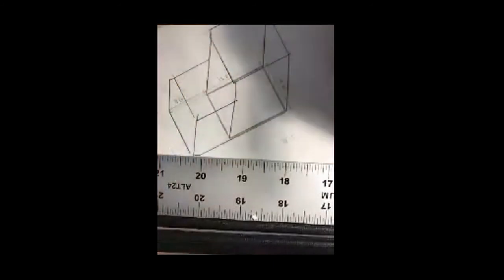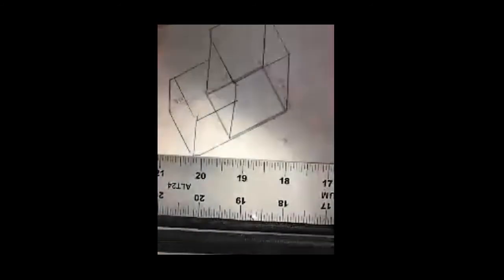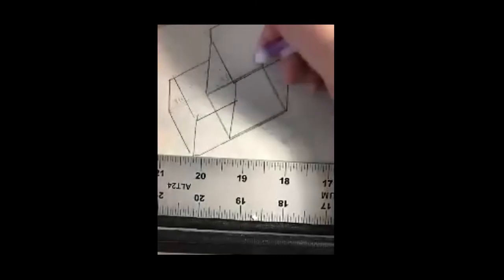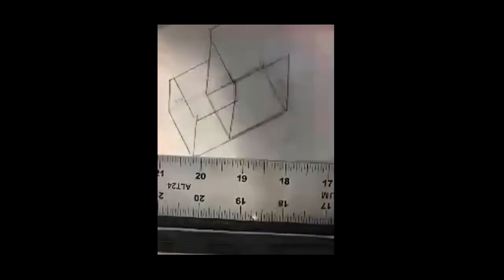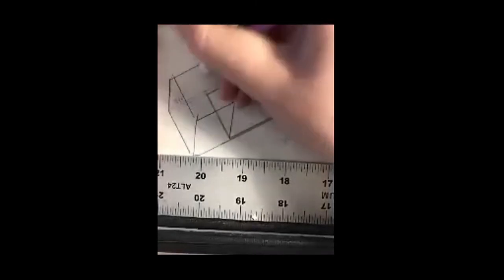Okay, and then once you have your shape or the basic idea of your shape, you'll just erase the lines that are on the inside that you wouldn't normally see if it was a 3D object and you'll just kind of clean it up.